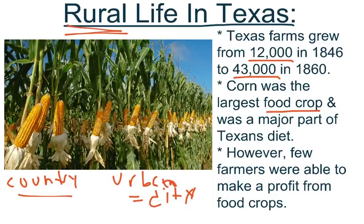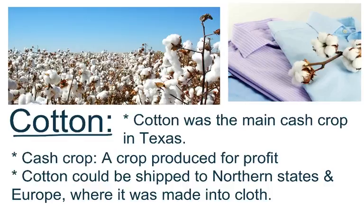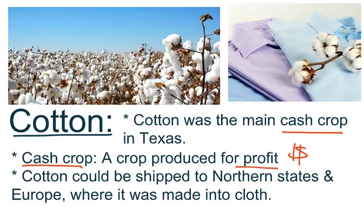So what a lot of farmers did is they turned to cotton. Cotton was the main cash crop in Texas. A cash crop is a crop produced for a profit or to make money. To recap: a food crop was used to provide food for the farmers, and a cash crop was produced to provide profit or money for farmers.